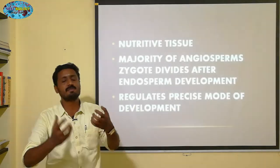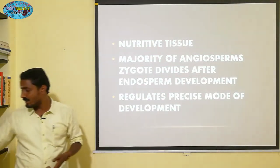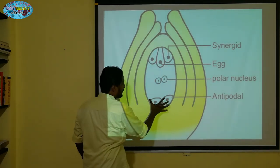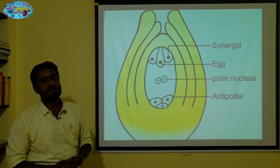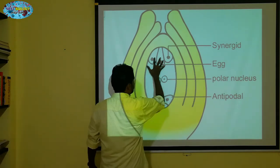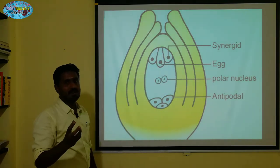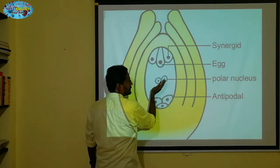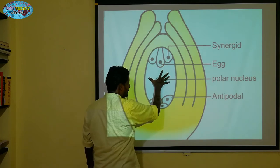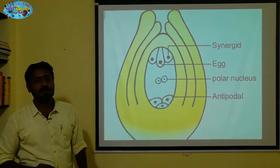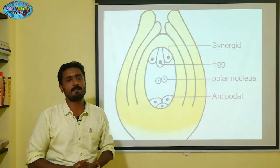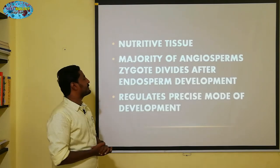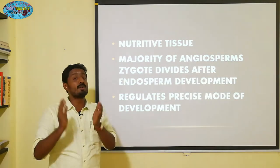The embryo is surrounded by the endosperm. In a particular stage, when the embryo is fully developed, the embryo occupies the space previously taken by the endosperm. So the endosperm acts as nutritive tissue. In the majority of angiosperms, the embryo development occurs after the endosperm development.